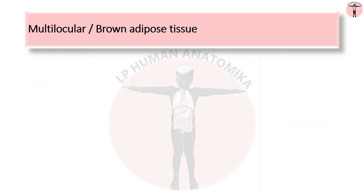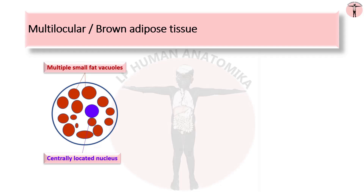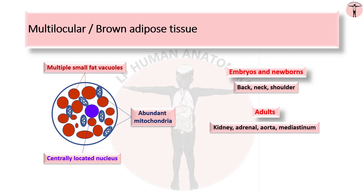Multilocular adipose tissue is present in embryos and newborns and is greatly reduced in adults. Adipose cells of multilocular adipose tissue are smaller in size than cells of unilocular adipose tissue. These cells have a single centrally located spherical nucleus, multiple small fat vacuoles, and contain a large number of mitochondria. Since it has multiple fat vacuoles, it is called multilocular adipose tissue. It is highly vascular, which gives it a characteristic brown color, hence it is called brown fat. In embryos and newborns it is located in the back, neck and shoulder; in adults it is reduced and present around the kidney, adrenal, aorta and mediastinum.